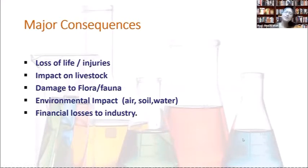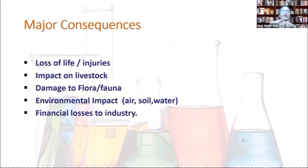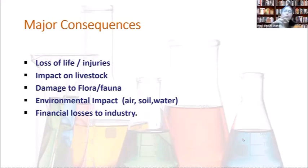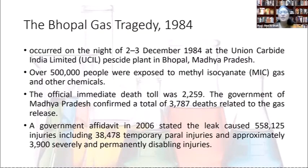Major consequences of industrial accidents include loss of life and injury, damage to livestock, and damage to flora and fauna. Chemical compounds may accumulate in soil, water, and organisms — and through fish consumption can reach humans via bioaccumulation and biomagnification, as seen in the Minamata Bay disease where mercury accumulated in fish and then transferred to humans. Financial loss to industry is also a consequence.